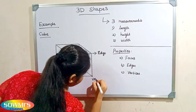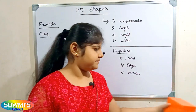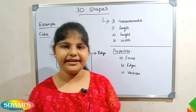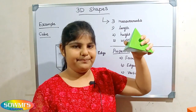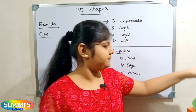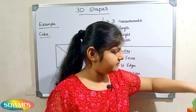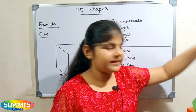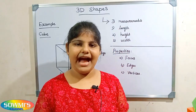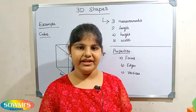Some other examples of 3D shapes are triangle-based pyramid, triangular prism, cone, and cylinder. Next we will see how to identify faces, edges, vertices and the base shape of 3D shapes.